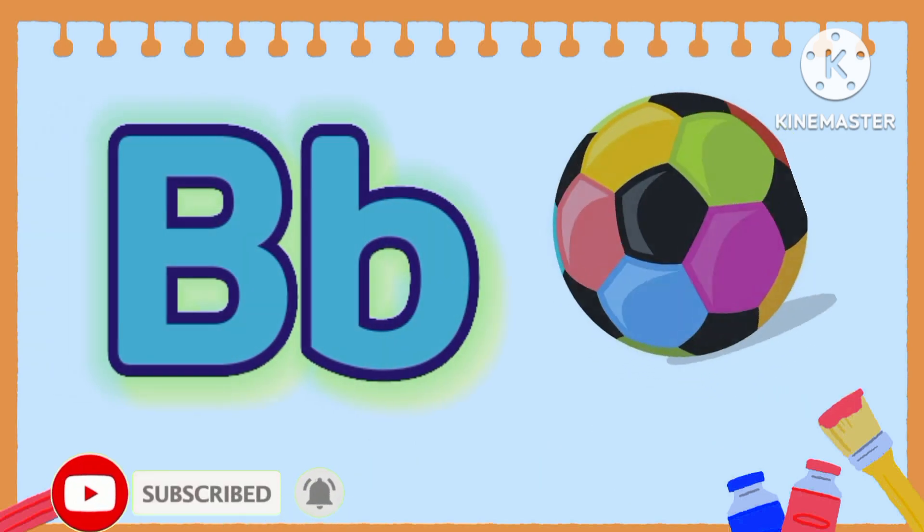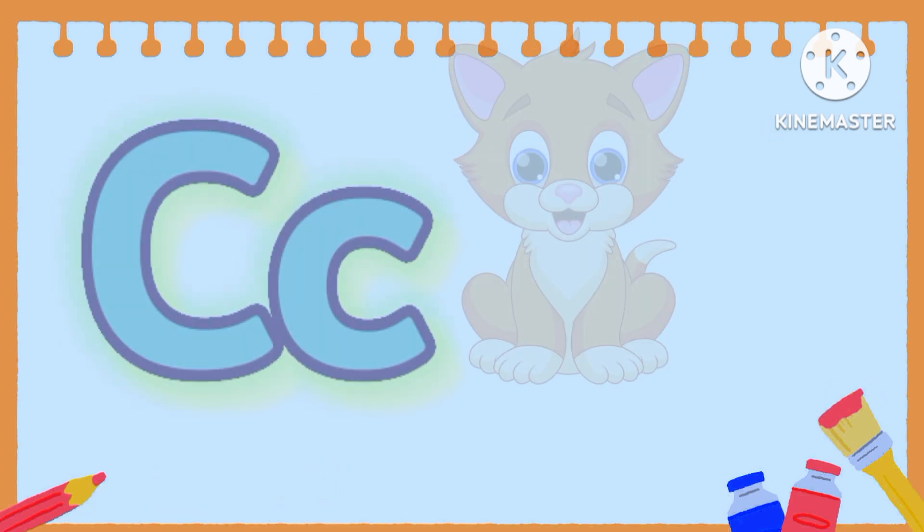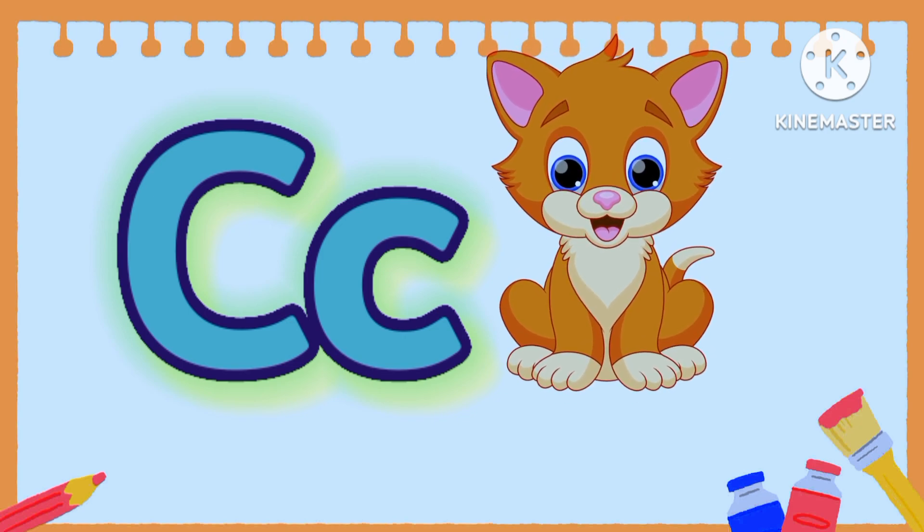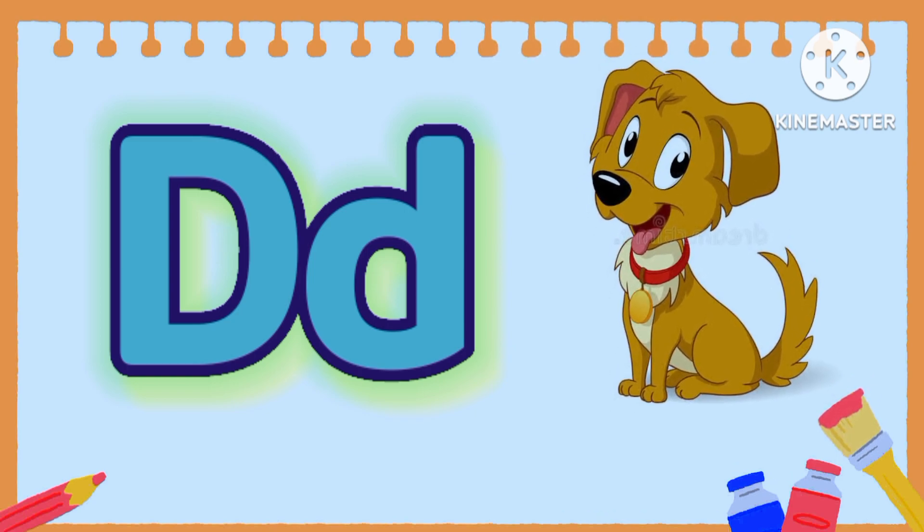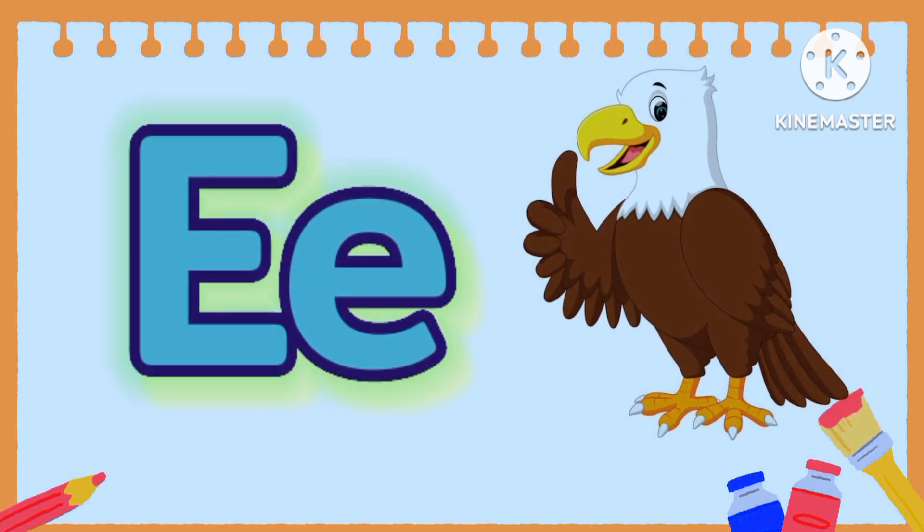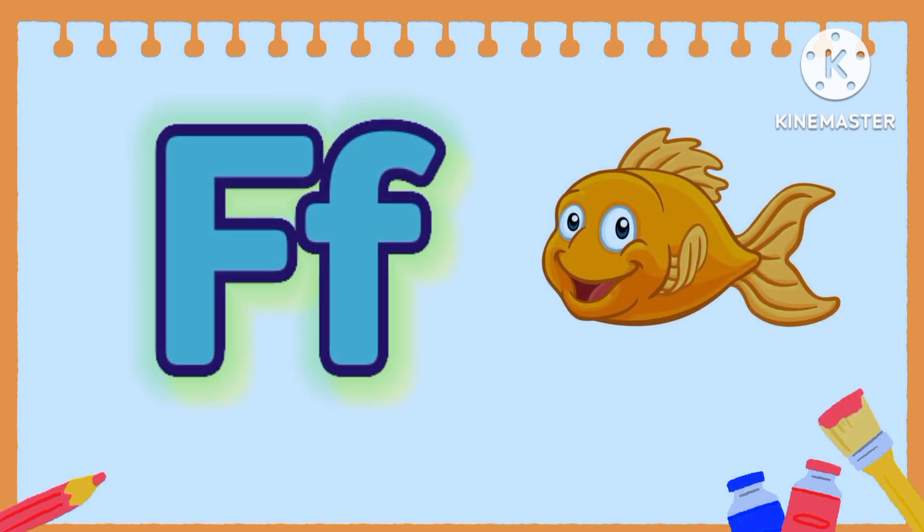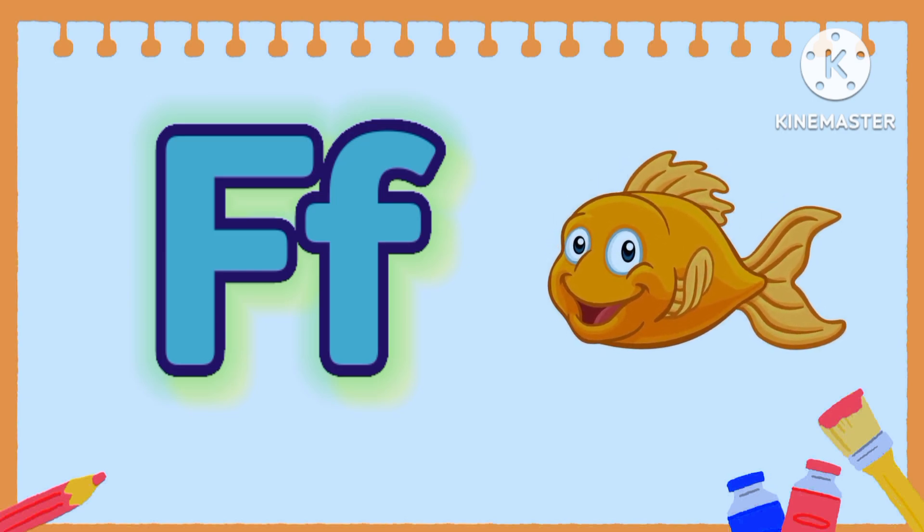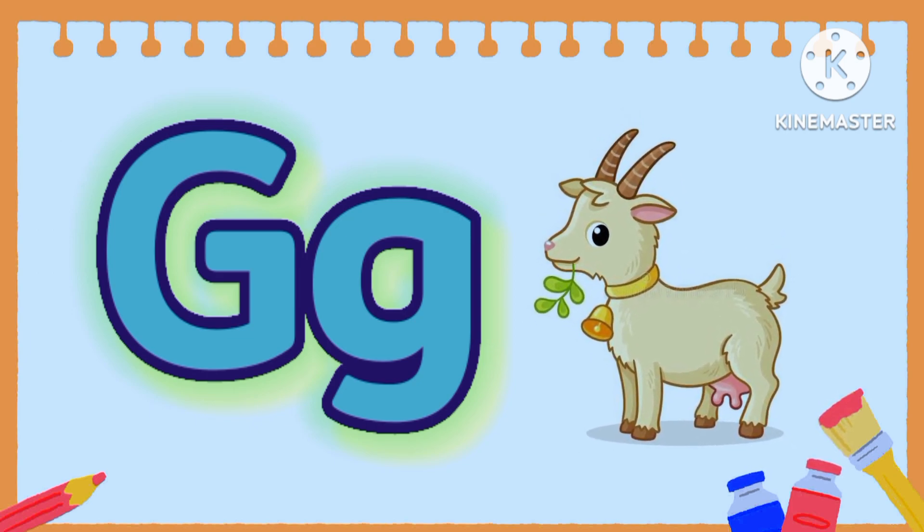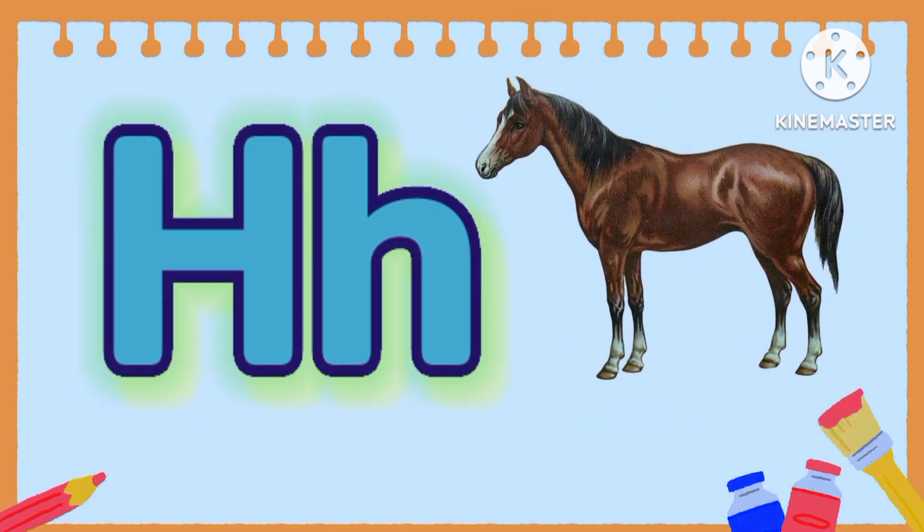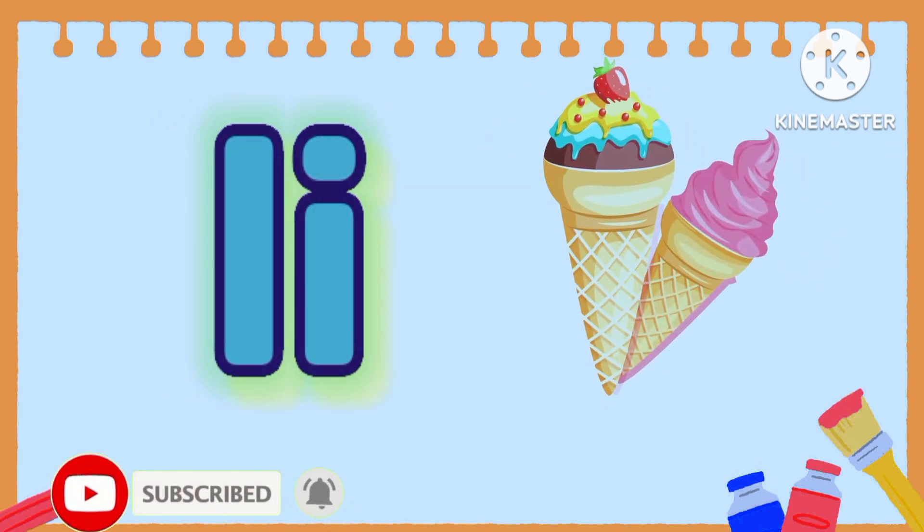B is for Boy. C is for Cat. D is for Dog. E is for Eagle. F is for Fish.